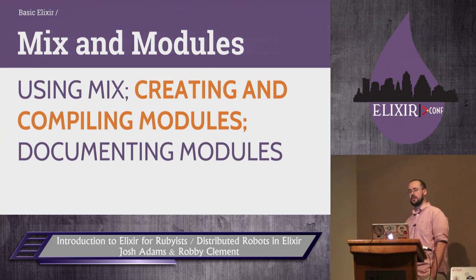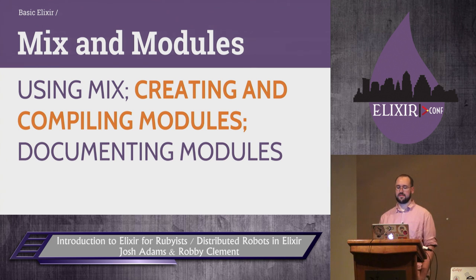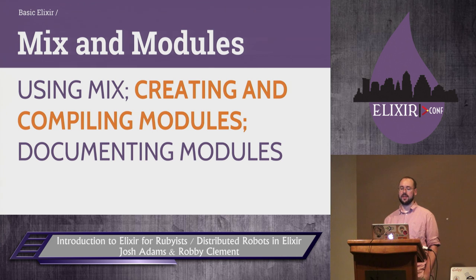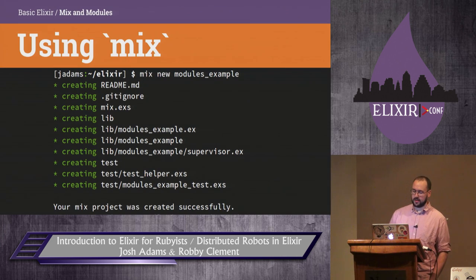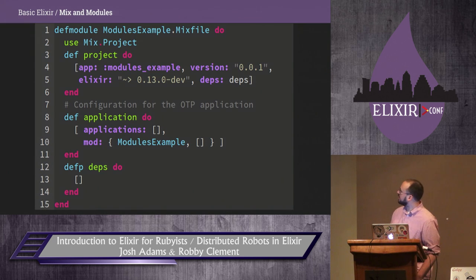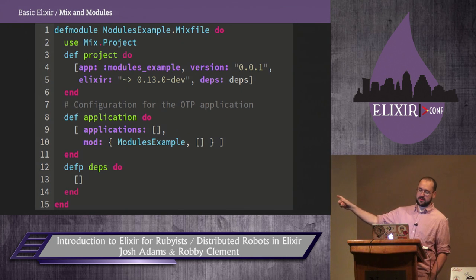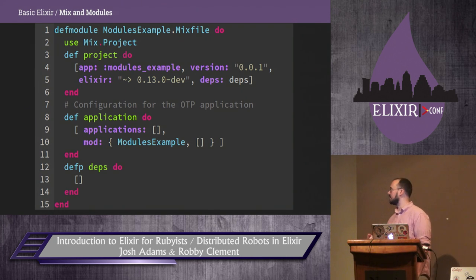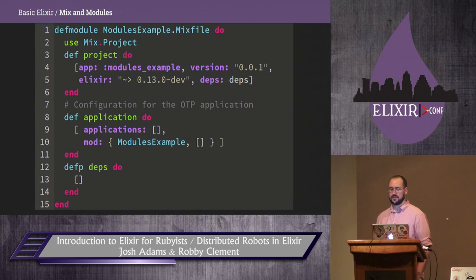Modules are the primary unit of code organization in Elixir. They can contain private and public functions. We'll cover using Mix to begin a new project, defining a module, compiling one, their return values, documenting them, and generating documentation output. Mix is used for creating, compiling, and testing Elixir projects. You can just call mix new — it generates a bunch of files for you, including a mix.exs where you can put your dependencies. There is hex, which is the package manager for Elixir.